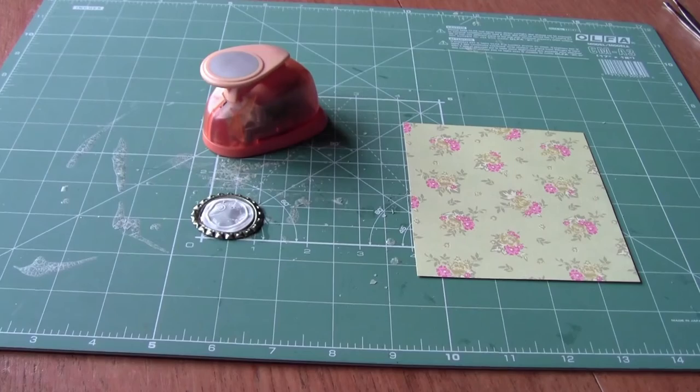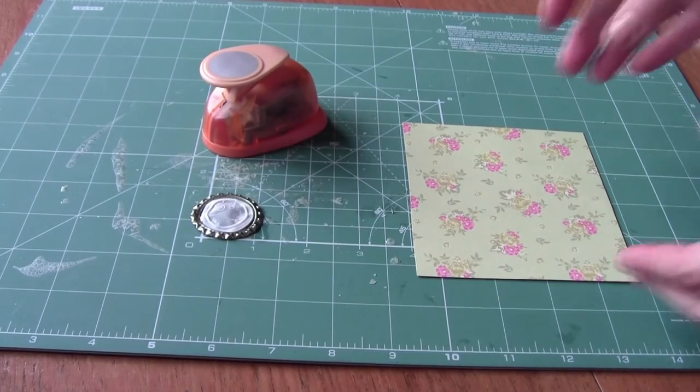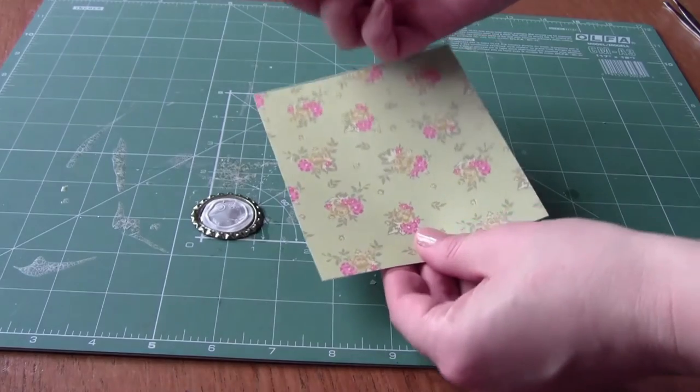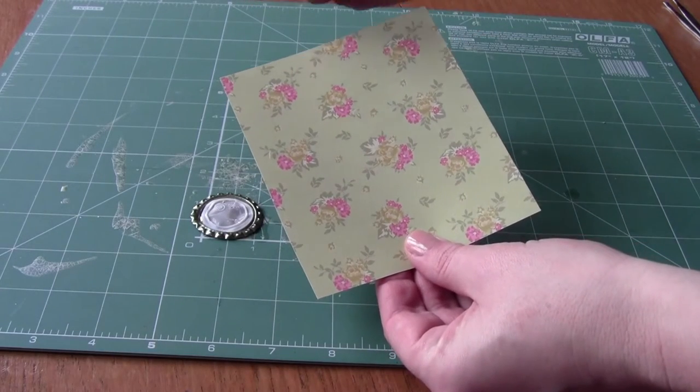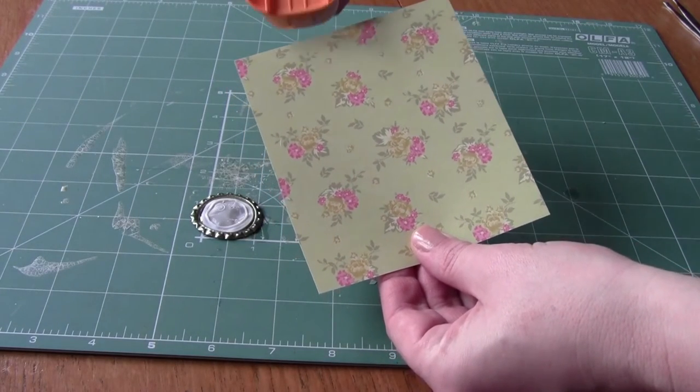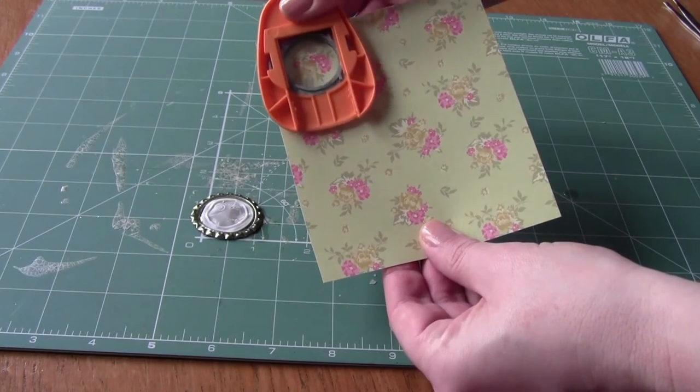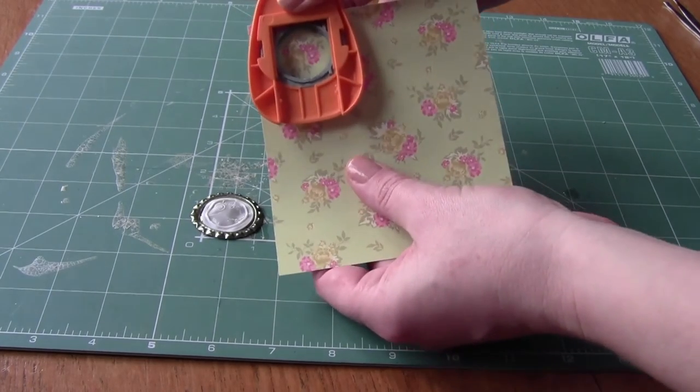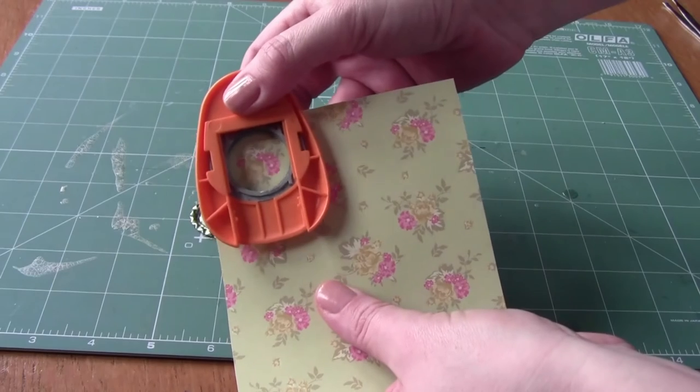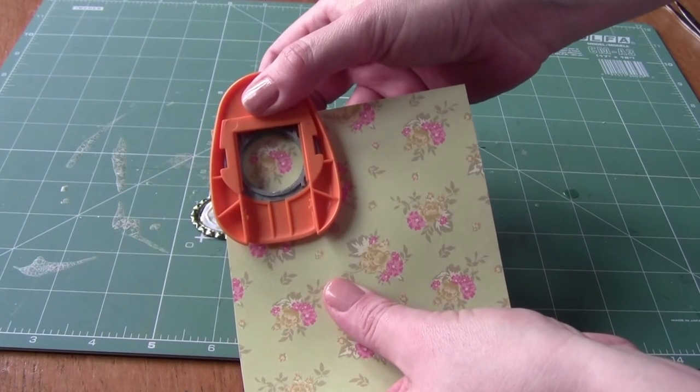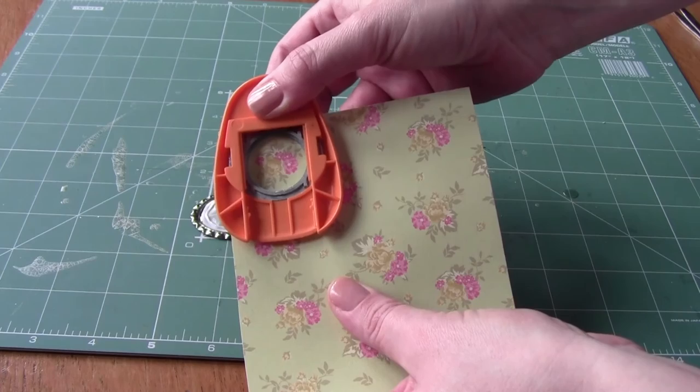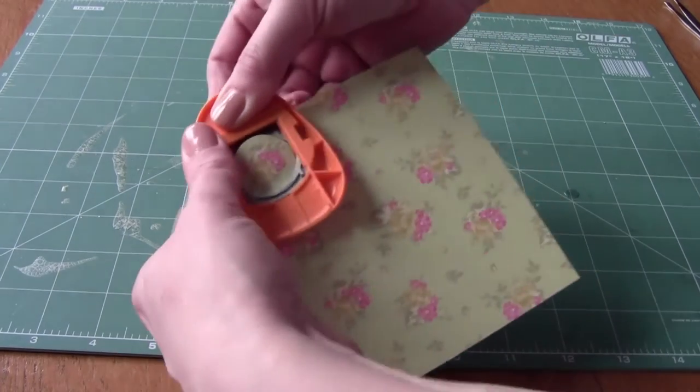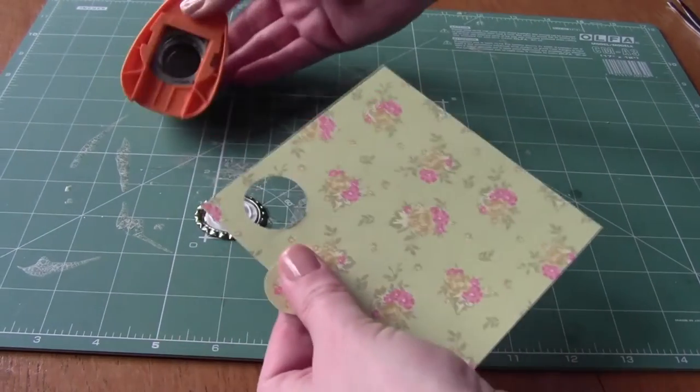Now we're going to make the patterned paper circle to sit on top of your flattened bottle cap. You want to use a one inch circle punch to punch a motif from pretty floral patterned paper. Here we're using Dovecraft Leyton paper for this. Turn the punch upside down to help you position the flower perfectly within the punch and then push through to make the top section that you need.